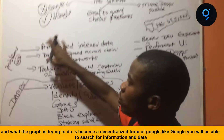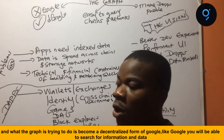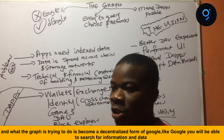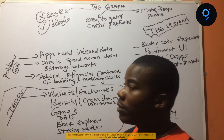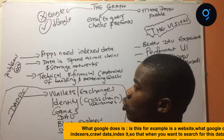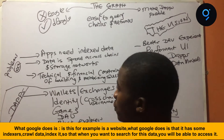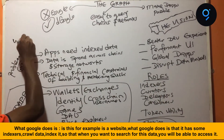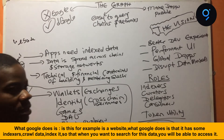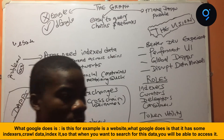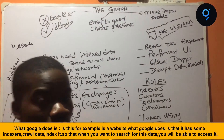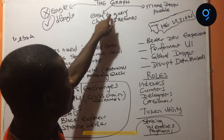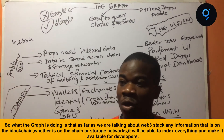What The Graph is trying to do is become a decentralized Google, where like Google, you can be able to search for information and search for data. What Google does is — if this, for example, is a website — Google has some indexes, it indexes data, so that when you want to search for this data, you'll be able to access it.